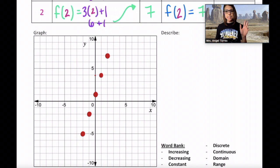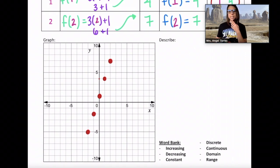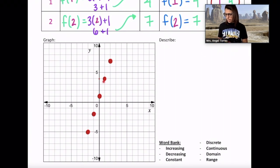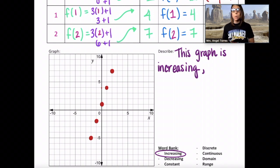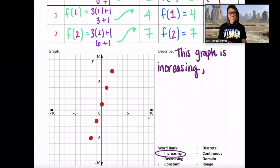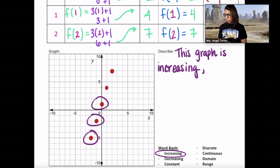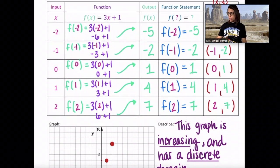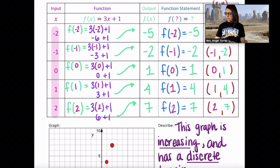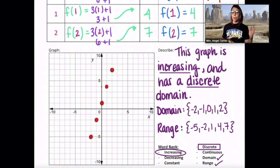The final thing we're going to do is connect this to what we learned earlier in the week. How can we describe this using our math vocabulary? Would we say that this graph is increasing, decreasing, or constant? As I move from left to right, my little red dot is going up, so that means this graph is increasing. Would we call this a discrete domain or a continuous domain? Discrete means countable. Can you count the number of points here? 1, 2, 3, 4, 5. Yes you can, which means this graph has a discrete domain. We could also add the domain and range. Our domain was our set of inputs and our range was our set of outputs. Remember, when we describe domain and range, we use set notation, ordered from least to greatest with no repeats.